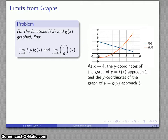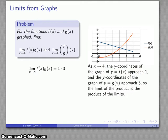So that tells me that my y coordinates of f(x) get close to 1, my y coordinates of g(x) get close to 3, and so the limit of the product is the product of the limits, 1 times 3 equals 3.